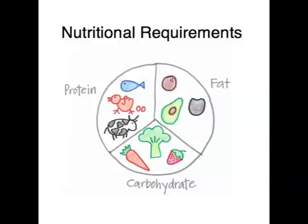Heterotrophs have several nutritional requirements. They need to have carbohydrates — so that's simple carbohydrates like glucose — and they actually store complex carbohydrates in the form of a polysaccharide called glycogen. So glucose is a monosaccharide and glycogen is a polysaccharide. Heterotrophs also need to eat lipids, which are fats, and lipids are really important as they compose the cell membrane, the phospholipid bilayer.